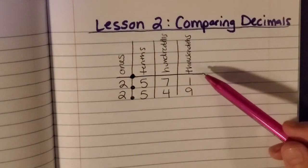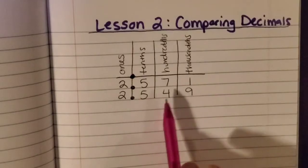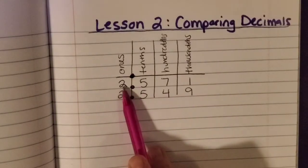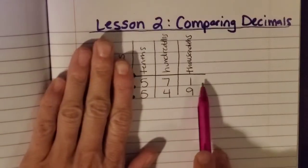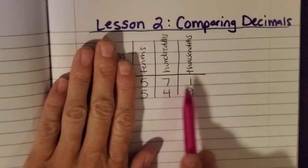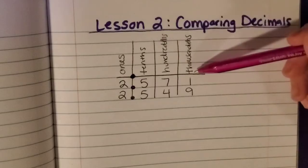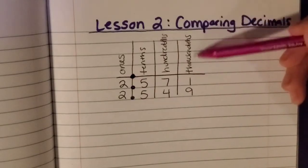So I have two different decimals to compare here. We've got two and, then I like to cover it up, 571, and then I say the last place value, which is thousandths.